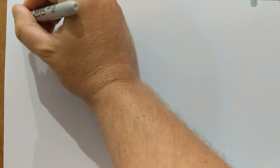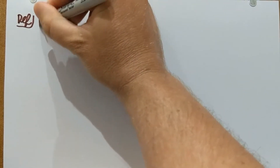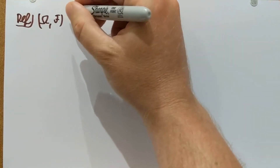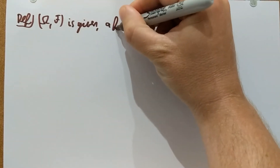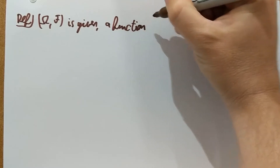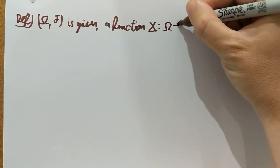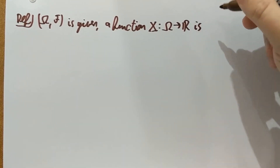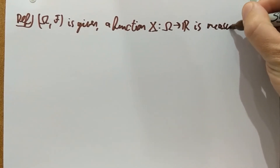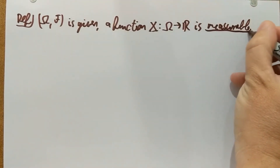This is going to be a definition. Assume that we have a measure space (Ω, F). A function, which I will denote by X, from Ω to ℝ is measurable on this measure space — we say the function is measurable —